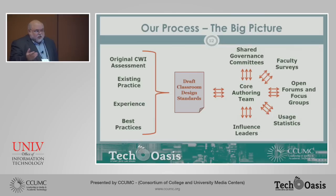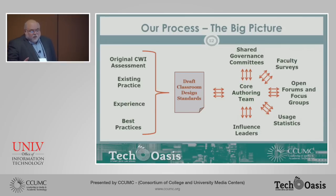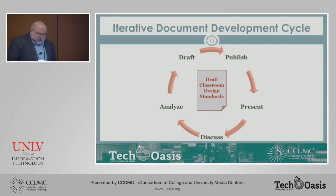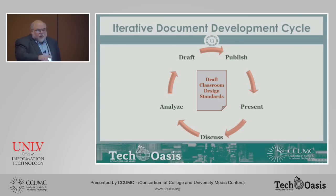Our approach was to start with a working document drafted from the original assessment that Campus Works had done a year before, incorporating best practices and experiences at many institutions. That draft went through multiple iterations with the core authoring team, which then interfaced with all different campus groups — shared governance faculty committees, surveys, open forums and focus groups, usage statistics, and conversations with faculty influence leaders — through an iterative process. The standards document was posted on the CCUMC site.